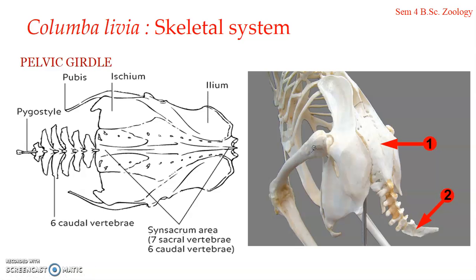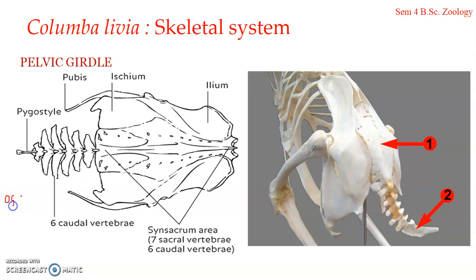Regarding the pelvic girdle, it consists of two separate halves. Each half is known as the os innominatum. So the pelvic girdle is actually formed of two os innominatum — one on each side.